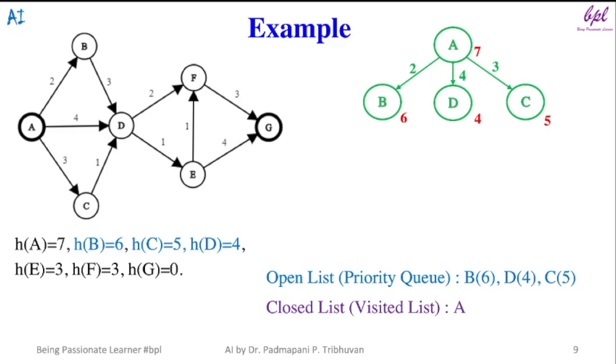Along with their heuristic values 6, 4 and 5 respectively. Out of these three nodes, a node which has less heuristic will be selected. Here D has less heuristic so it will be selected. It is not a goal node so it will be expanded.